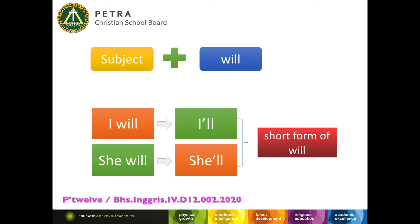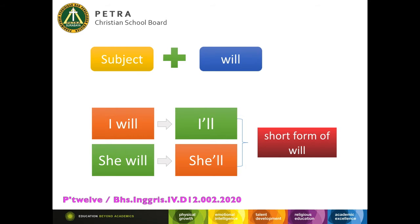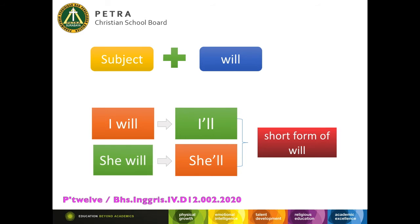Next, there is a way how we write 'will' in short form. It is easy. I provide you some examples with subject plus will. For example, 'I will' becomes 'I'll,' and 'she will' becomes 'she'll.' These are the examples of short form of will.